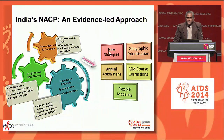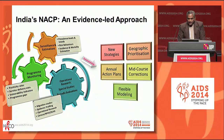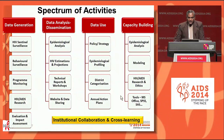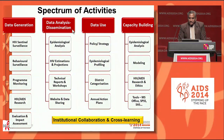This provides us inputs for developing new strategies, for affecting mid-course corrections, for prioritizing in the geospatial locations, for making our annual action plans, and for flexible modeling. In terms of spectrum of activities, we have data generation, data analysis and dissemination, data use, and also the need for building the capacities.